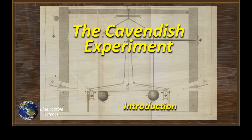This experiment has always fascinated me — the fact that Henry Cavendish could conduct this experiment in the late 1700s and determine the density of the earth, hence the mass of the earth, and if you take one more small step, you have the universal gravitational constant. Cavendish arrived at a value within one percent of the accepted value we use today.